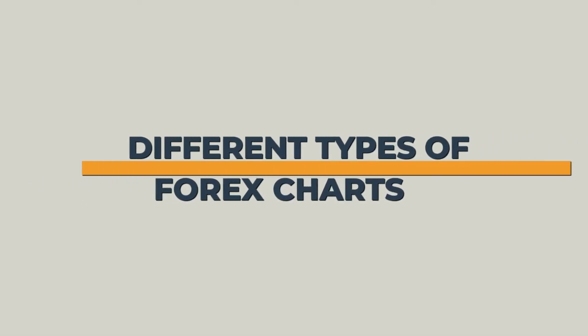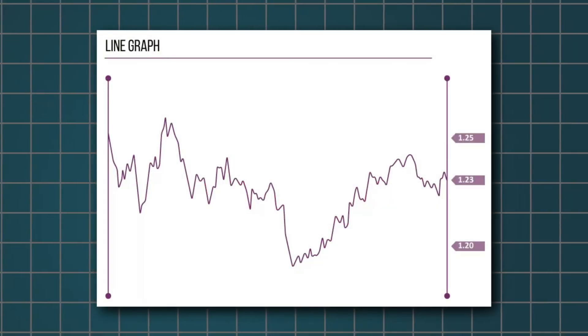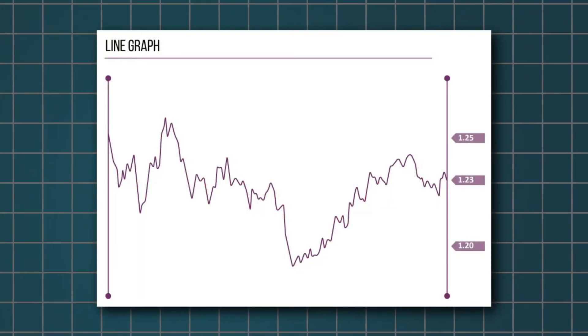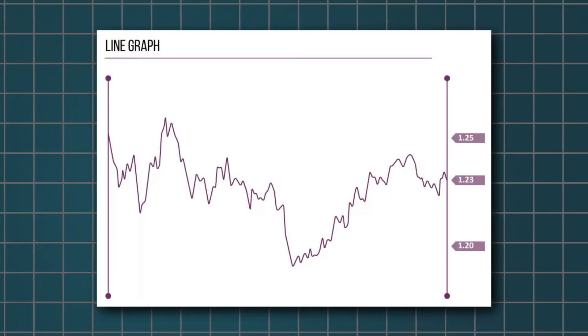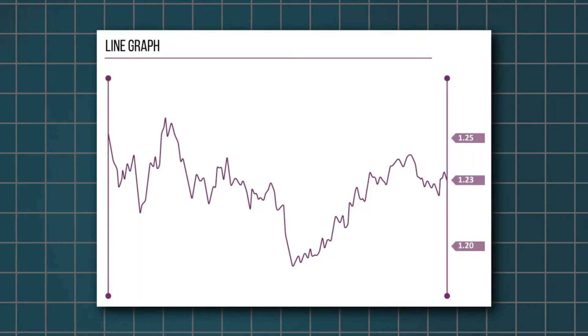Let's talk about the different types of Forex charts. First up, we have line charts. These are the simplest of the bunch. Line charts connect the closing prices of a currency pair over time, creating a visual representation of its rise and fall.